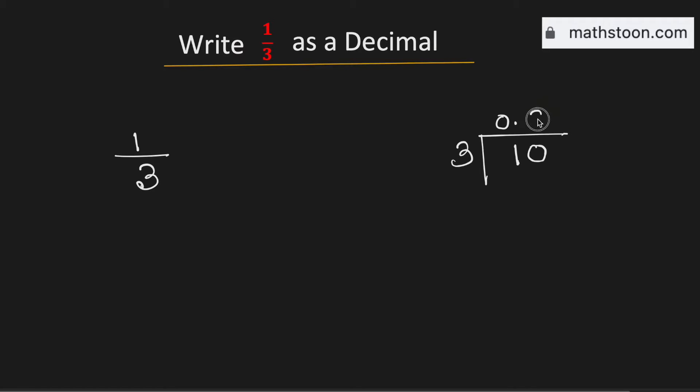Now we know that 3 times 3 is 9. Now if we subtract we get 1.